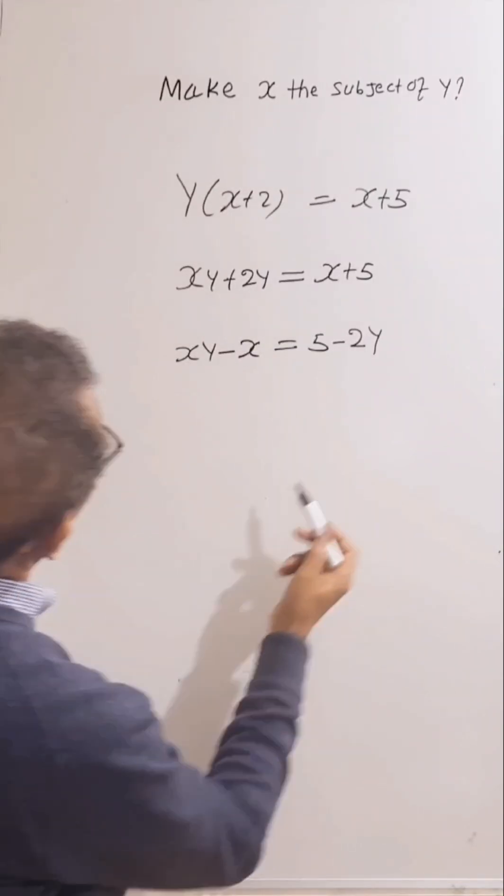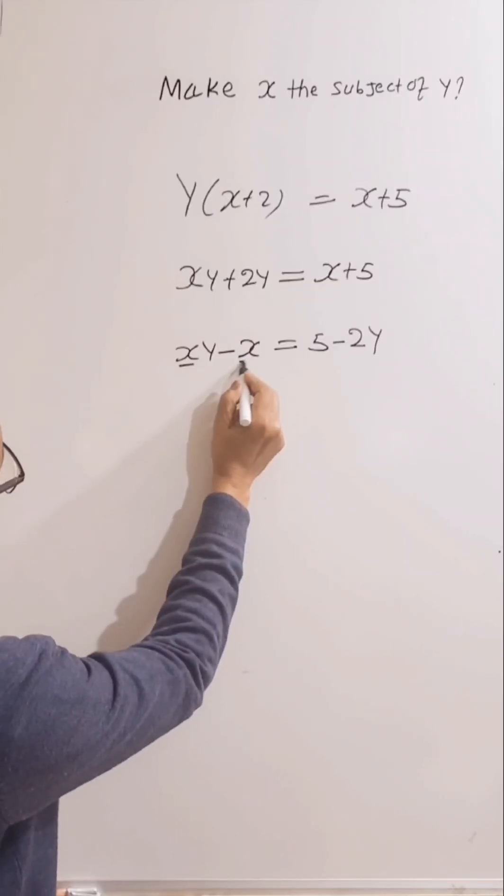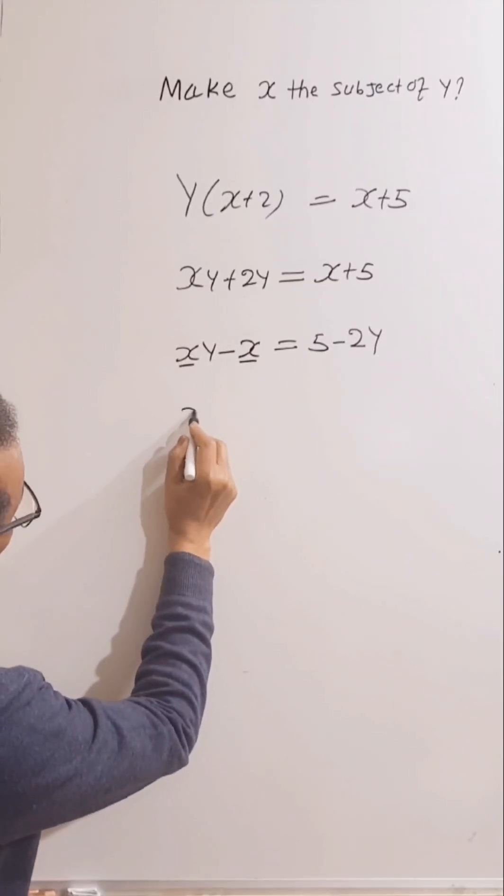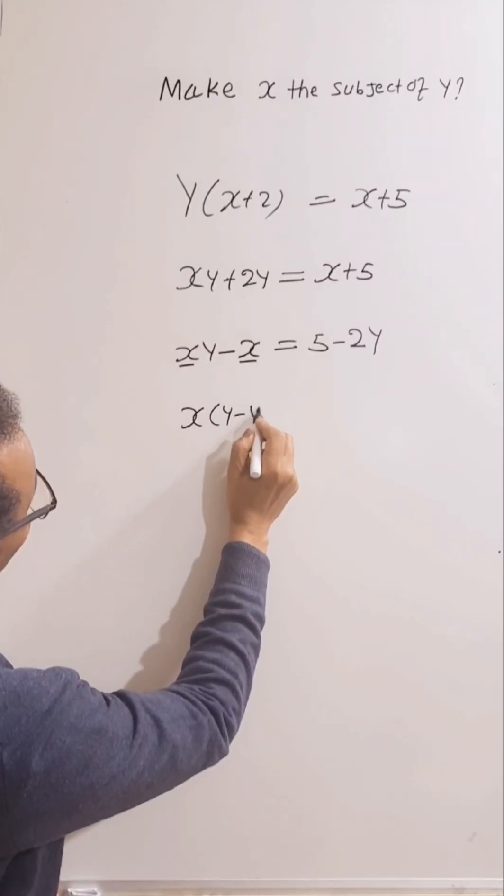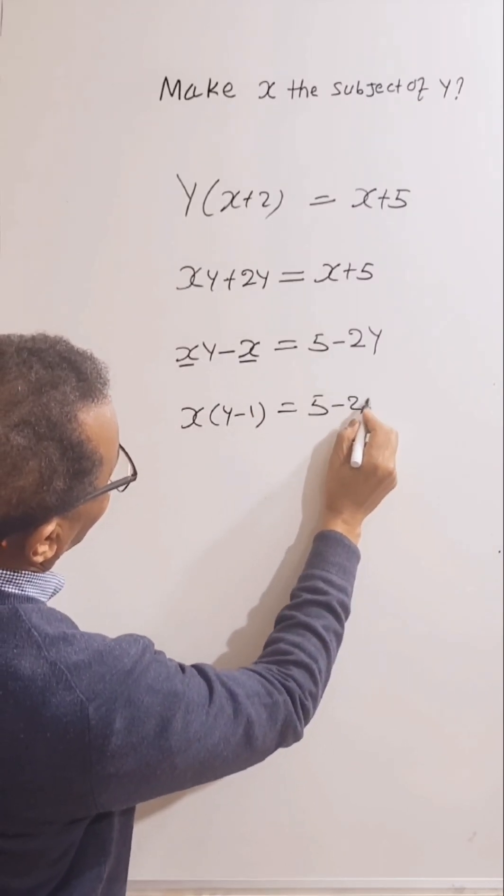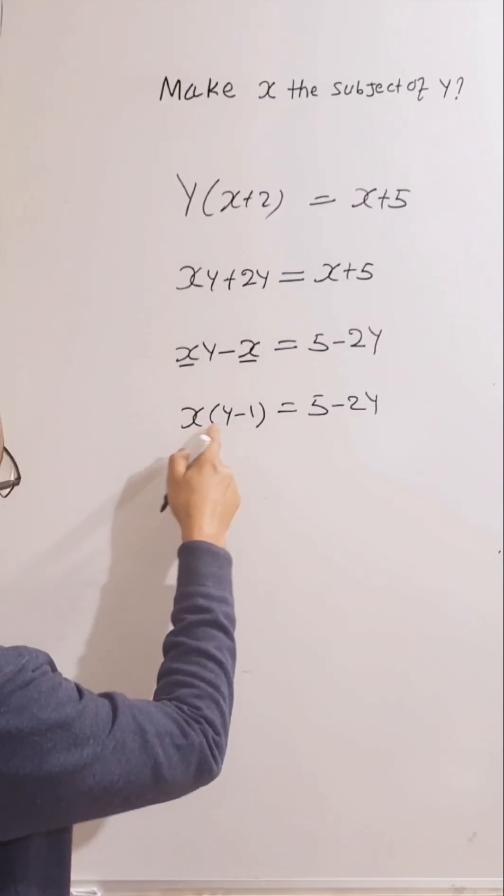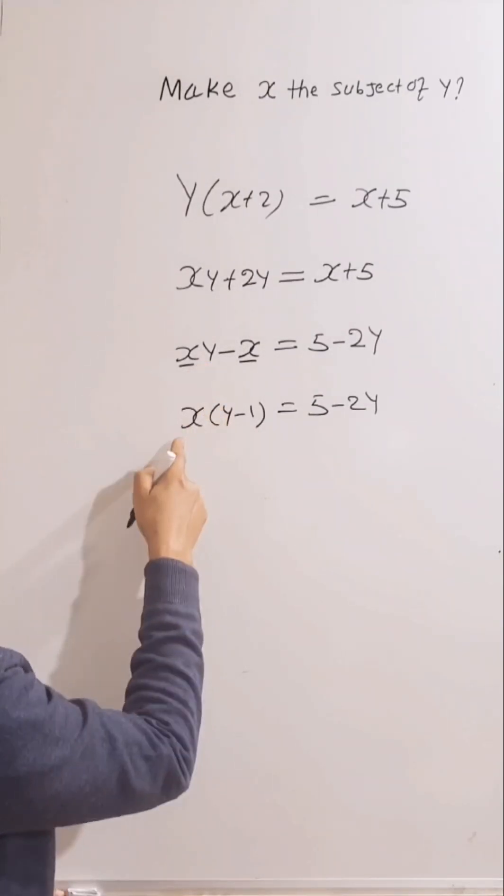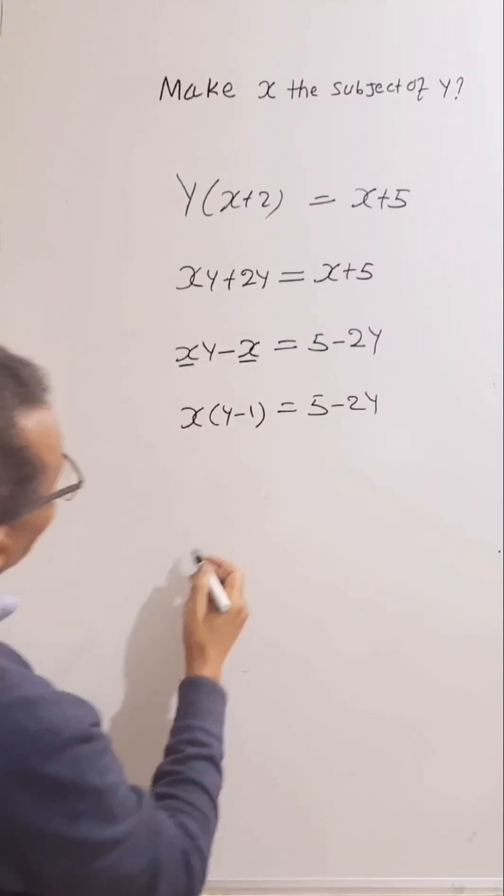Let's factorize the left side, because we've got a common factor here. So x, y, take away 1, equal 5, take away 2y. This is x times y is xy. x times negative 1 is negative x.